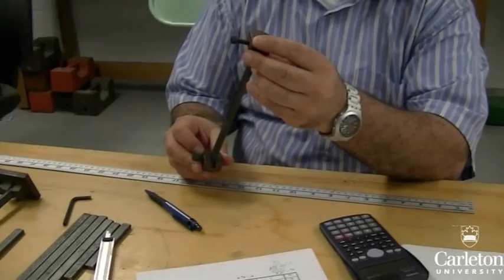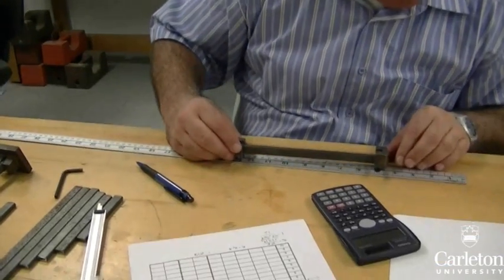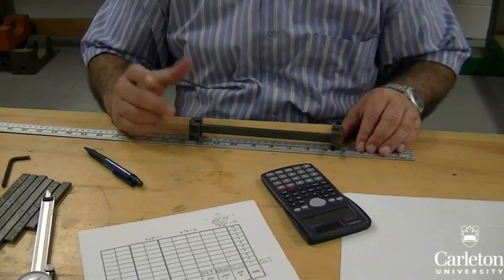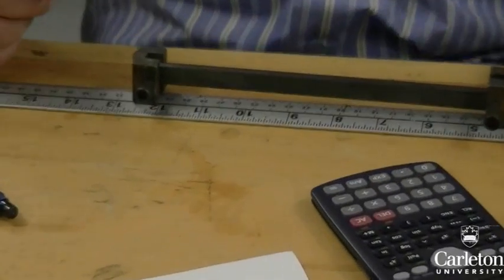Measure the effective length, or L prime, of each column using a ruler. To do this, first assemble the supports for each column.